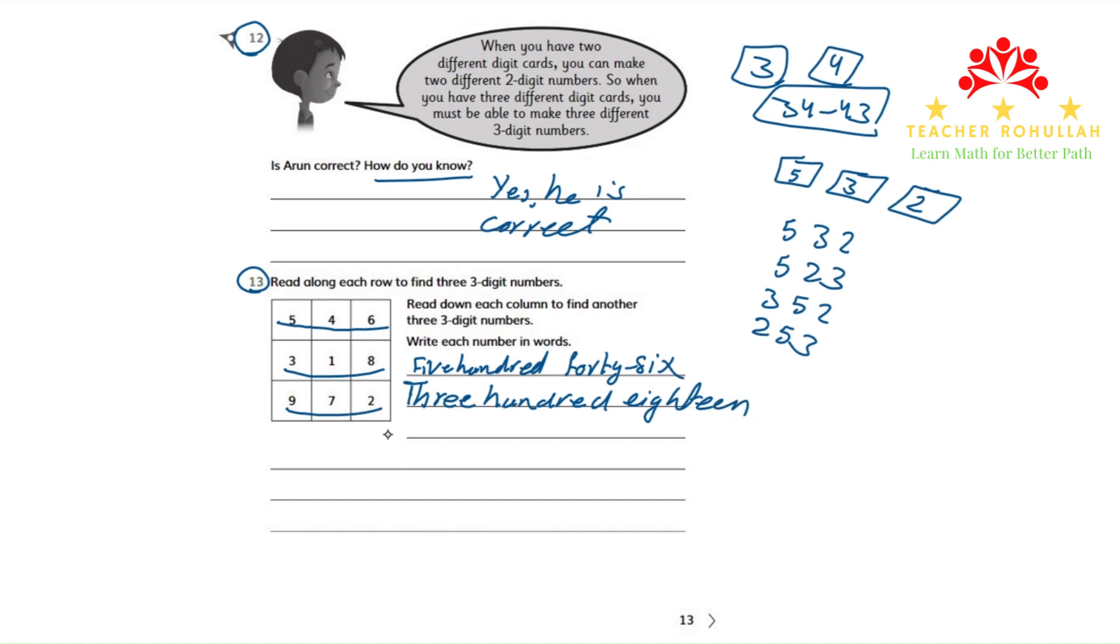The third one is 972: nine hundred seventy-two.